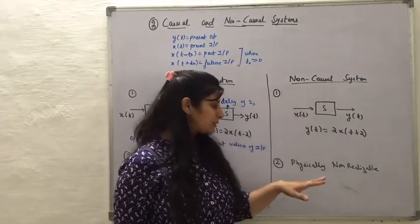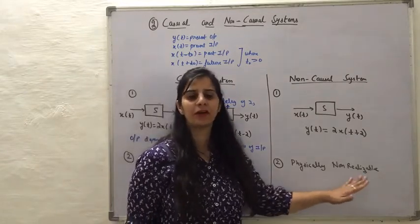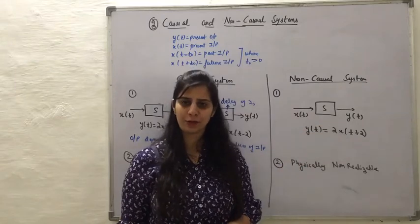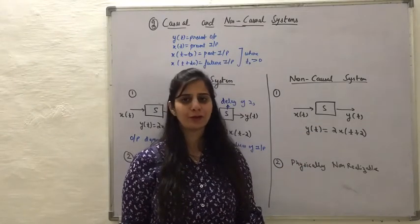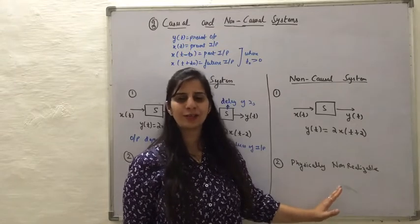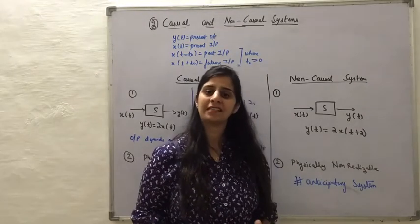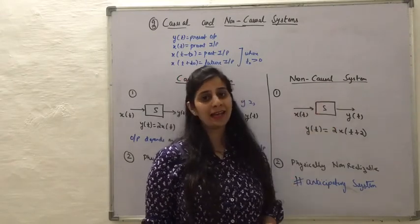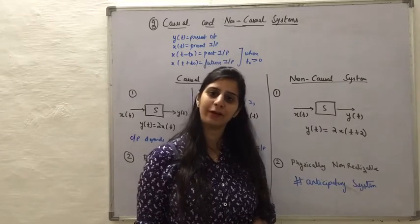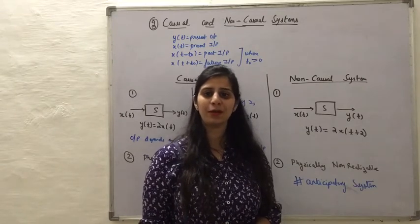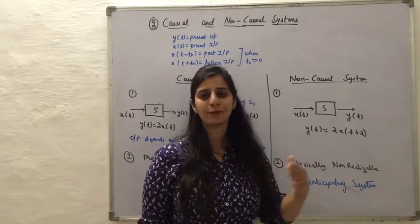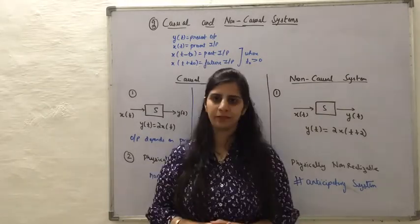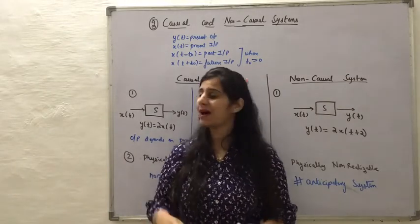Non-causal systems are physically non-realizable because the system has to predict future values of the input. Since it has to predict future values, it is also called an anticipatory system. There is an exceptional case where it is possible to make a non-causal system: when the input is available in recorded form. When the input is available in recorded form, we can access future values, making the non-causal system possible. But all real-time systems are causal systems.